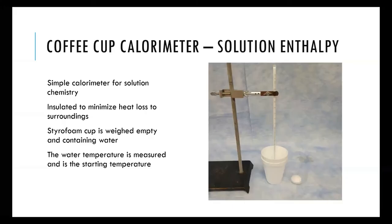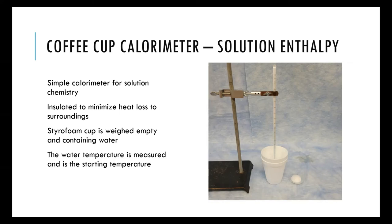Another calorimeter setup — one of the most basic designs — is a Styrofoam cup with water in it. Styrofoam is a well-insulating material, minimizing heat loss to the surroundings. You can also nest two cups inside each other for even less heat loss. These types of calorimeters are used to perform solution reactions, and in the lab you'll be measuring heats of solution and heats of reaction using this calorimeter setup.